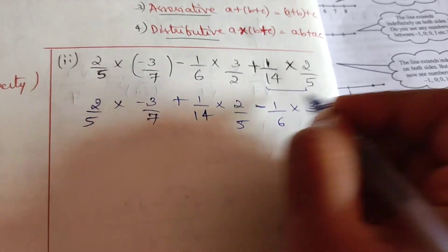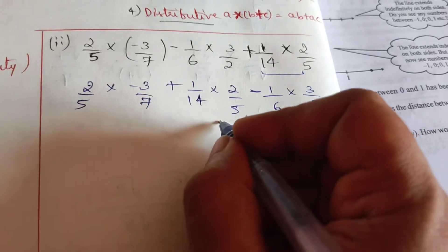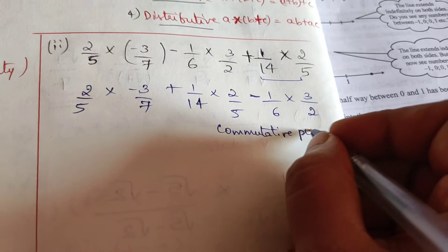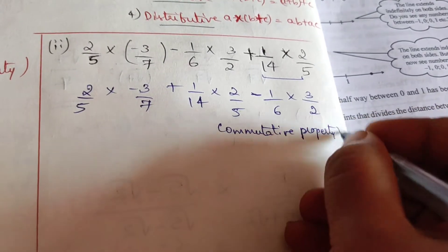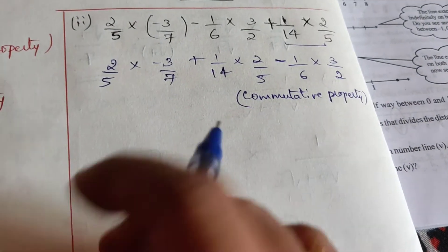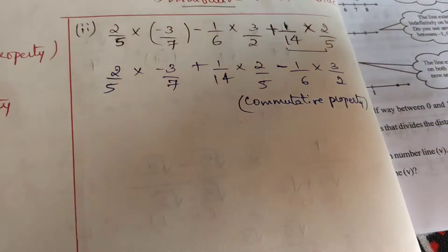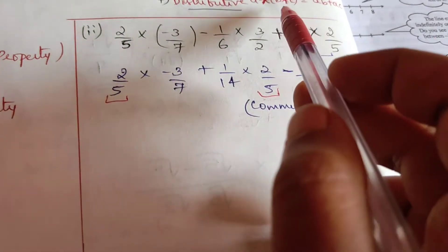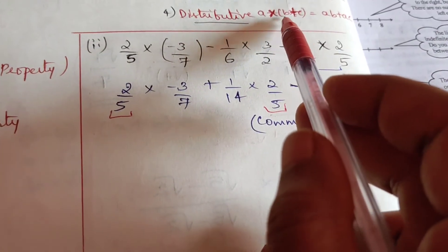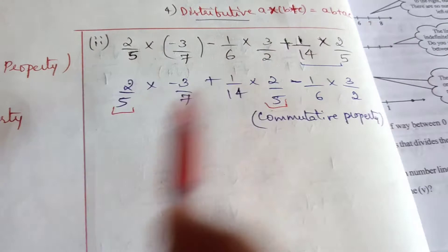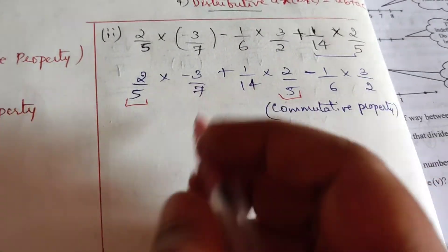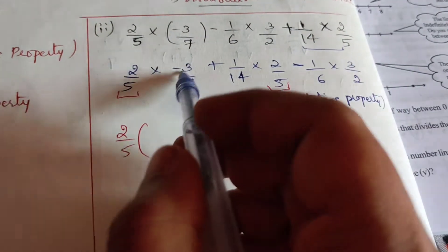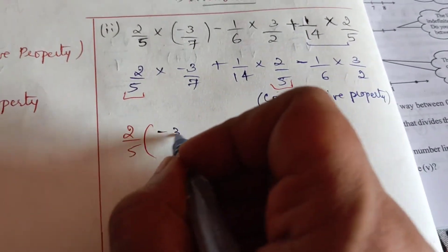We are using commutative property here and we have rearranged. Now in our next step we see 2/5 is common, so we use distributive property: a × (b + c) = ab + ac. So that property we are going to use here, we are going to take 2/5 common and what is remaining we will write it inside, that is -3/7 + 1/14.